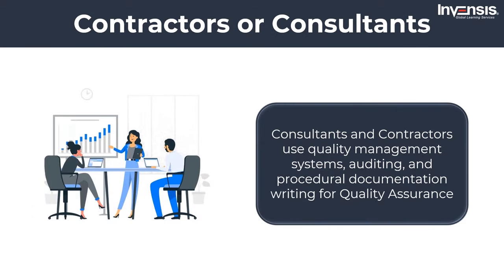When using contractors or consultants and adopting new quality practices and processes, consultants and contractors usually use quality assurance, especially when the necessary skills, experience, and resources are not available inside the business. For quality assurance, quality management systems, auditing, and procedural documentation writing are frequently used by consultants and contractors, as are CMMI, Six Sigma, measurement systems analysis, quality function deployment, failure mode and effects analysis, and advanced product quality planning.